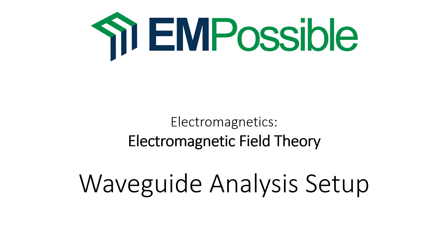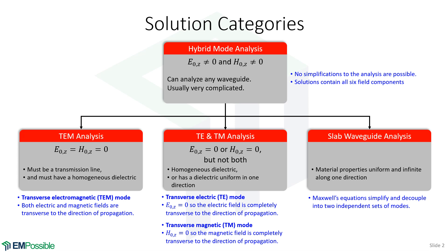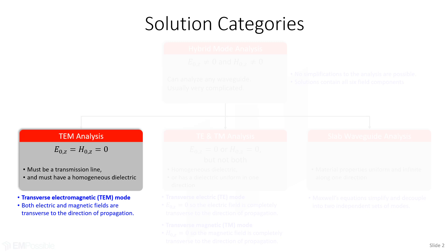So here's this map of all these different types of waveguide analysis. But in this video, we're talking specifically about TEM analysis, where the longitudinal components are zero. So we already know this must be a transmission line, and it has to have a homogeneous dielectric. That's what we're talking about in this video.